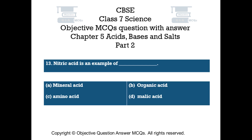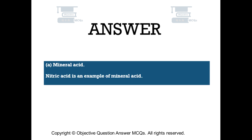Question number 13. Nitric acid is an example of — Option A: mineral acid. Option B: organic acid. Option C: amino acid. Option D: malic acid. The right answer is option A — nitric acid is an example of mineral acid.